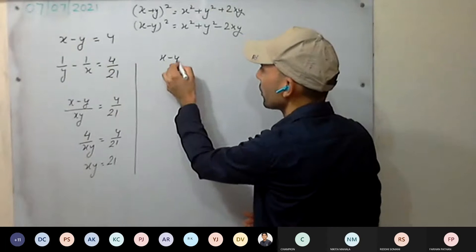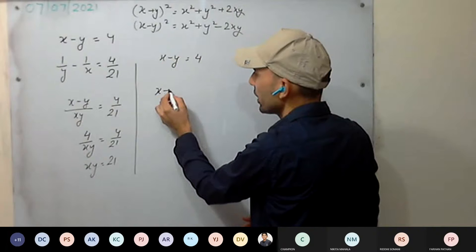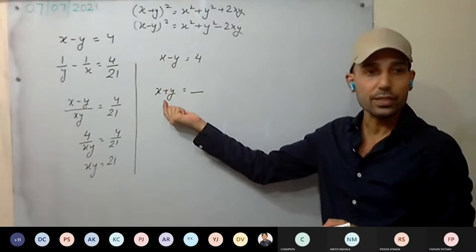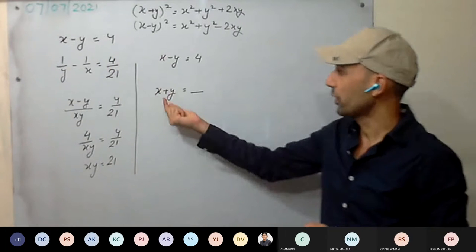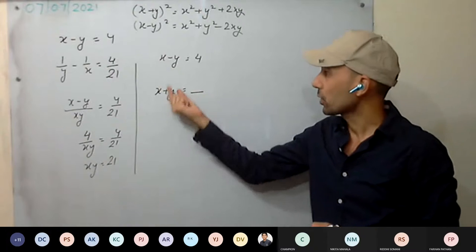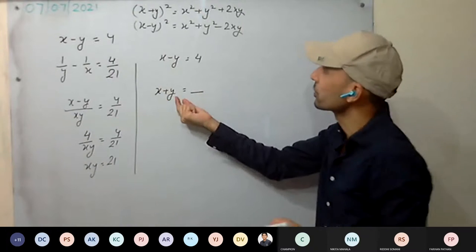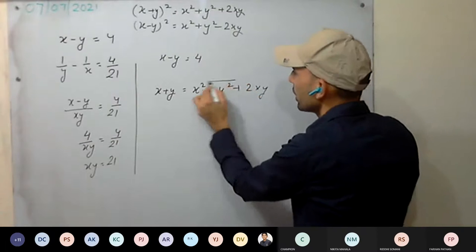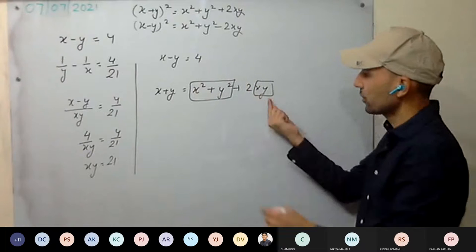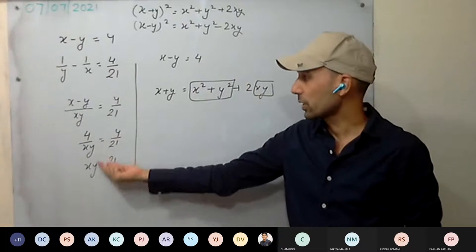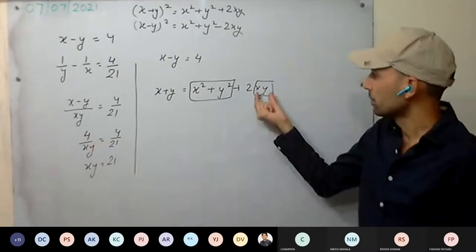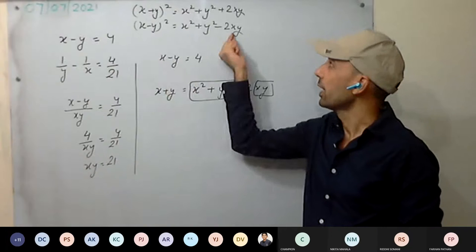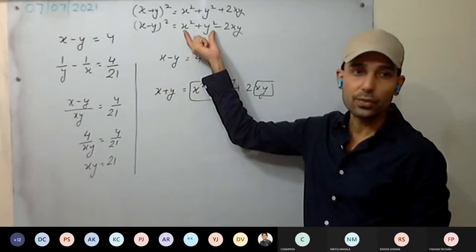Now, x minus y we have as 4. What we require is x plus y equal to something. If we get the value of x plus y, we can solve the two equations afterwards. To get the value of x plus y, we need x squared plus y squared and the value of xy. The value of xy we already have as 21. Now using the second equation with x minus y equal to 4, we can get the value of x squared plus y squared.